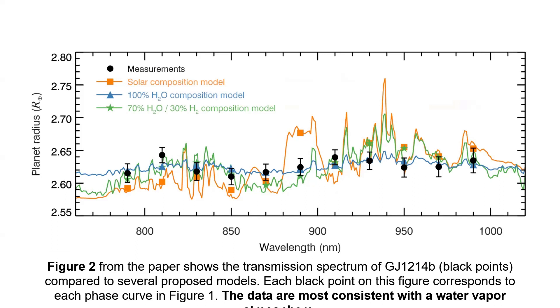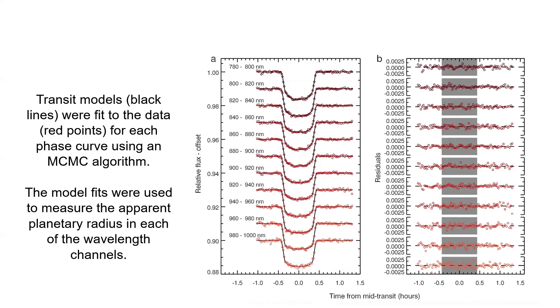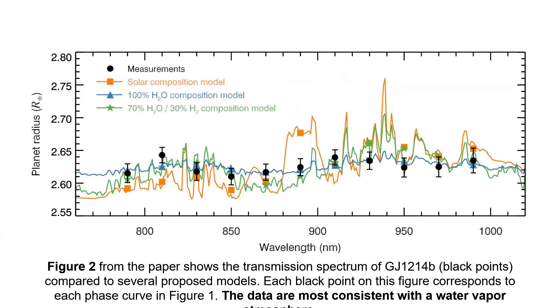This data was used to make the final transmission spectrum. This shows some results finally that we are able to interpret. The apparent planetary radius at different wavelengths is shown as these black points here. Each of the black points corresponds to one of these phase curves in figure one. So they took the apparent transit depth at each of these and they made it into one of these black points for the plot. And the plot also shows a few of the proposed options for the atmospheric composition. So in orange, we have a solar composition model, which is a hydrogen rich atmosphere. In blue, we have a pure water atmosphere, which is the most consistent with the data. And in green is a 70% water atmosphere, which is I believe the least amount of water that they could have where the spectrum was still within one sigma of the data. So the data here is shown to be in pretty good agreement with some kind of water dominated atmosphere.